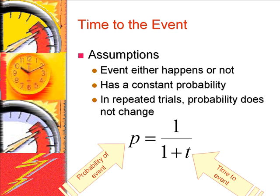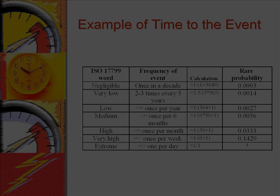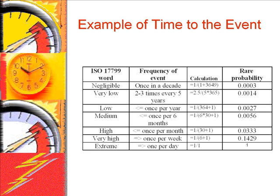In a geometric distribution, the probability of a rare event p is related to the average number of trials to, or time to, the event. This table shows how this relationship can be explored to calculate rare probabilities.